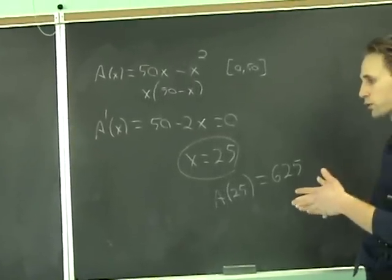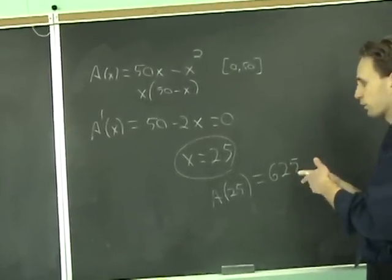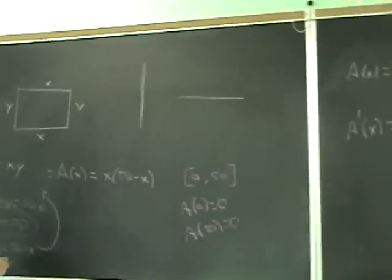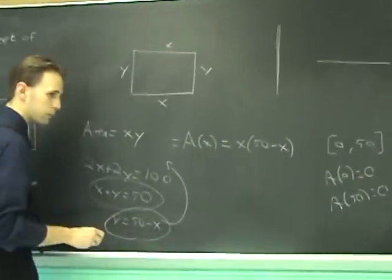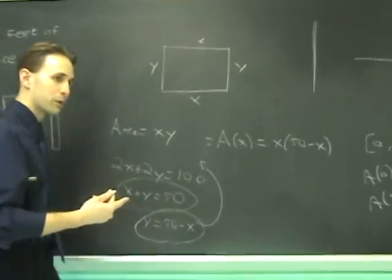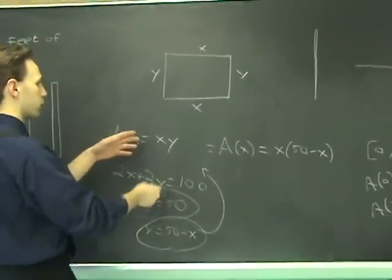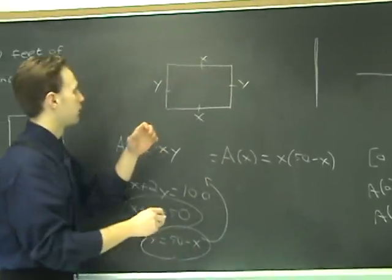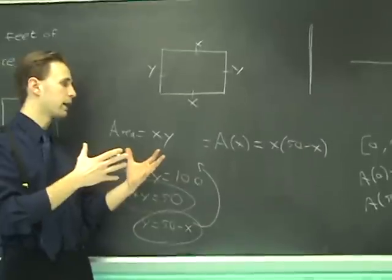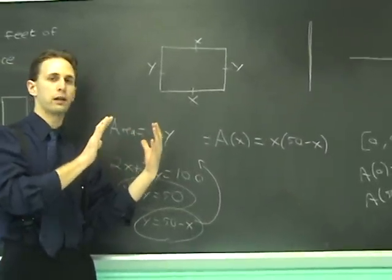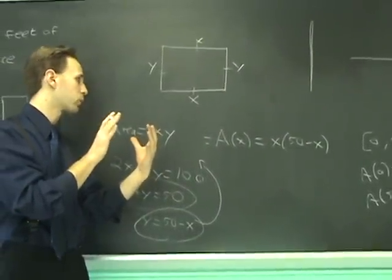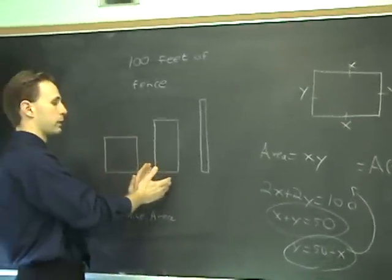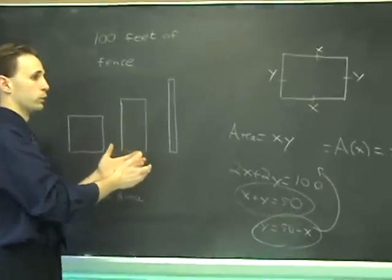And, notice that if you started out with 100 feet, if you had x equal to 25, what's that make y? You come back here. You said y had to be 50 minus x. So, if x is 25, y is also 25. And, you wind up with a square. So, if you have 100 feet of fence, the maximum area that you can get occurs when you shape that into a square. Anything else, any one of these kinds of situations, the further that you deviate from it being a square, the more area that you're going to lose.